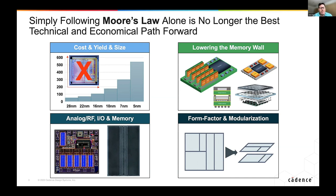When you build chips near the reticle limit, they don't yield well anyway. The Xilinx example from 10–12 years ago illustrates this: they took a large FPGA, repartitioned it into four pieces, and put it on a silicon interposer. That was, some would argue, the birth of this world of heterogeneous integration.